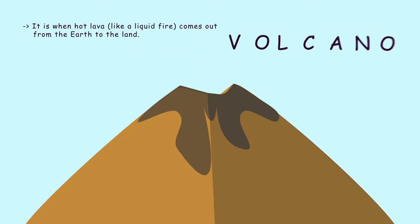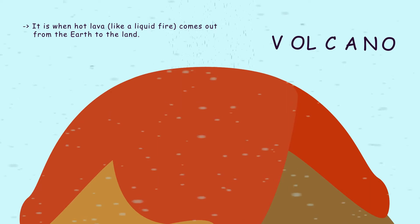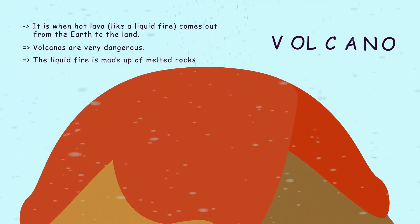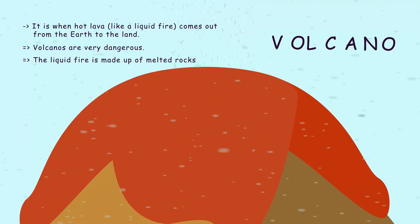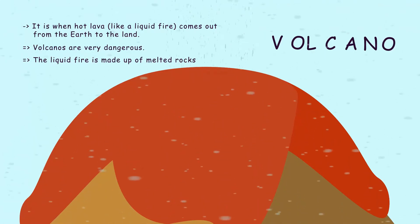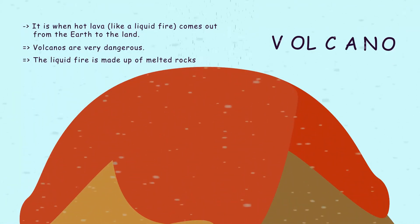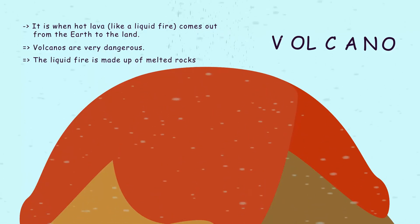Volcano. It is when hot lava — like a liquid fire — comes out of the earth to the land. Volcanoes are very dangerous. The liquid fire is made up of melted rocks found under the earth, and ash is released to the sky when a volcanic eruption happens.